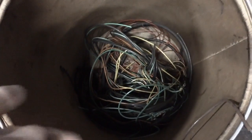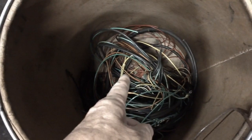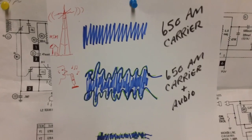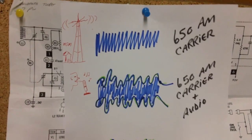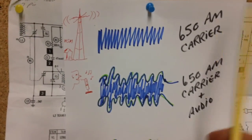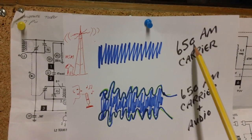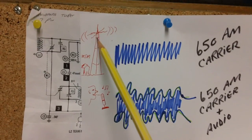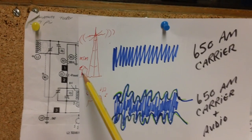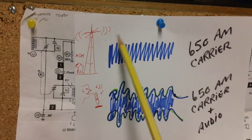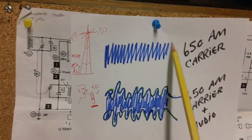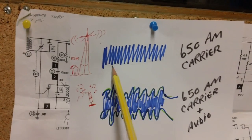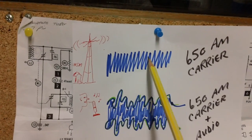Let's take a look at this carrier business — the frequency generated by the radio station, the RF carrier. In our case, 650 kilocycles, 650 AM out of Nashville. It's being transmitted by the antenna — the guy's in the little radio shack talking — and it's being transmitted out into the air at the same frequency, perfectly even top and bottom.